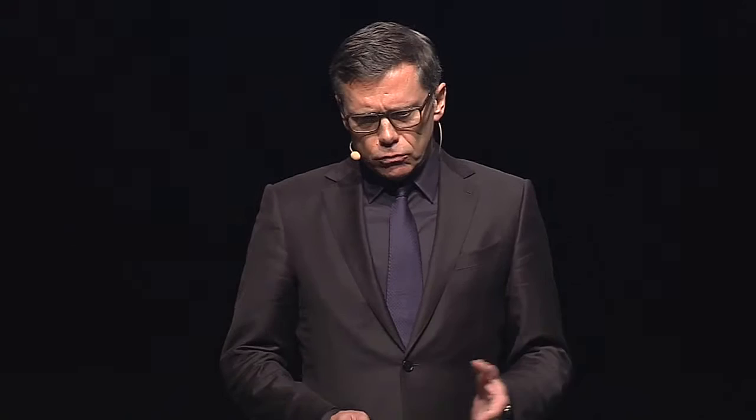Before I do that, let's look at some concepts. I want to define what a critical vulnerability is. In my definition, it's a design feature that, if exploited, jeopardizes the victim's capability to prevent unacceptable consequence. Two items are noteworthy: unacceptable consequence is a policy decision — not a technical feature. You, as the asset owner, decide what is unacceptable. For example, in a nuclear power plant, that would be a radiological release.